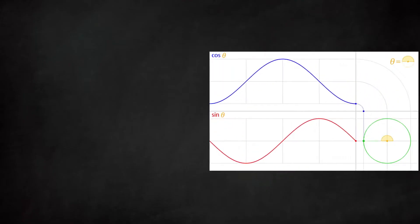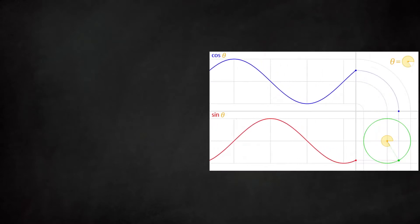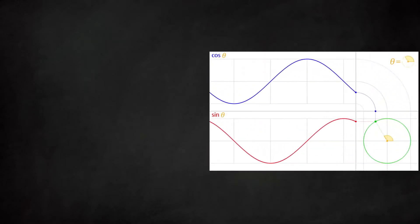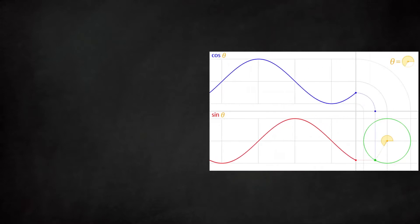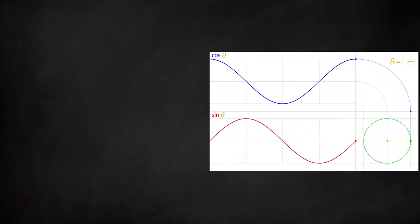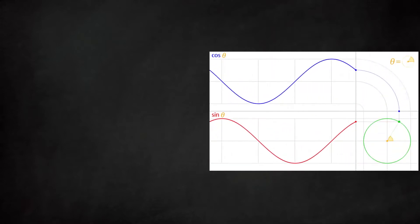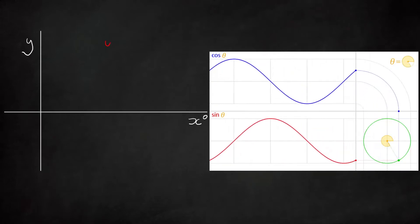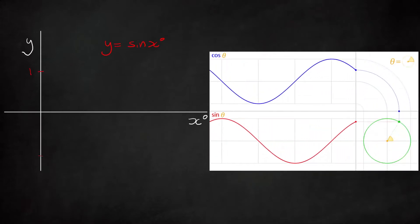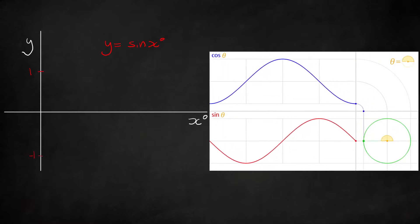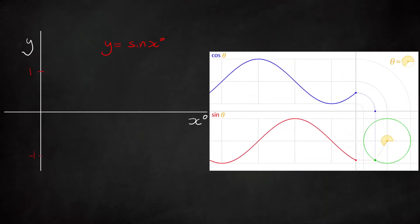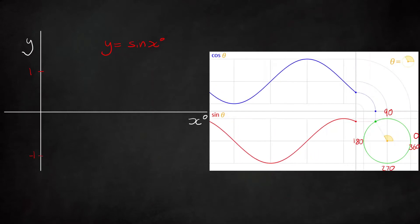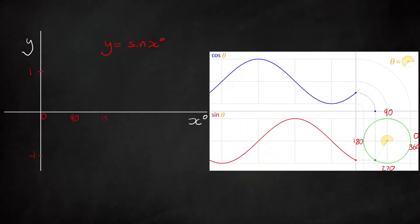Now, remember you don't need to know where the graphs come from or how the unit circle works — I just think it makes it more interesting and easier to remember what they look like, but you just need to know how to draw them. So let's draw them, starting with sine. We'll plot y equals sine x, and remember the maximum is 1 and the minimum is minus 1, and noting that the circle is 360 degrees — this is why we plot the graphs from 0 to 360 degrees.